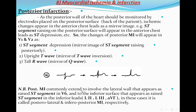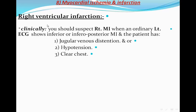Posterior infarction commonly extends to involve the lateral wall, appearing as raised ST in V6, or the inferior surface, appearing as raised ST in the inferior leads — these are called posterolateral or infero-posterolateral MI respectively. Right ventricular infarction should be suspected clinically when an ordinary ECG shows inferior or infero-posterior MI and the patient has jugular venous distension, hypotension, and/or a clear chest.